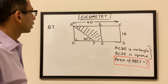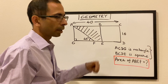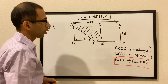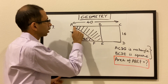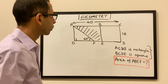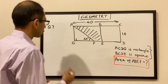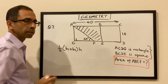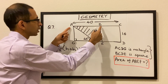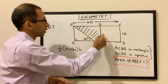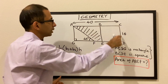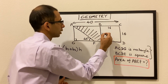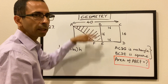Let's move to our last question. ACDG is a rectangle, BCDE is a square, length CD is 16, overall length AC is 40, and we have to find the area of the shaded portion ABEF — essentially the trapezoid. The area of a trapezoid is given by half times (base 1 plus base 2) times the height. In this case B1 is one base, B2 is the other base, and this is the height. Since BCDE is a square, each of the sides is 16, so this is 16, this is 16, and the height of the trapezoid is also 16.